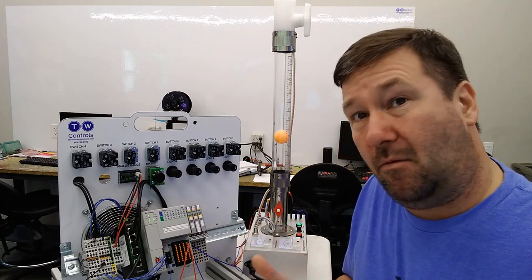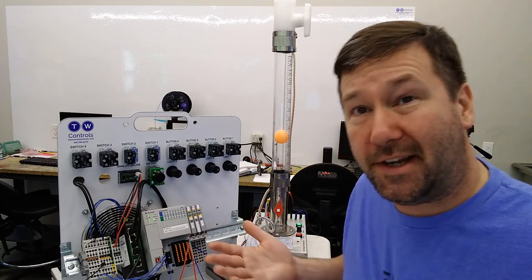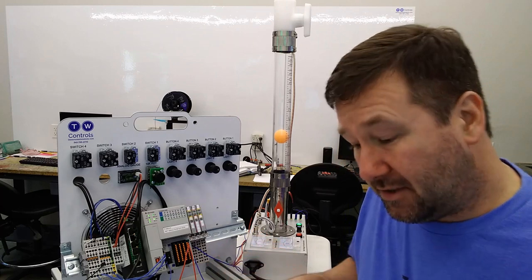And then why did we add integral? And why was that not perfect either? And what is this derivative? So that's what we're going to go through.